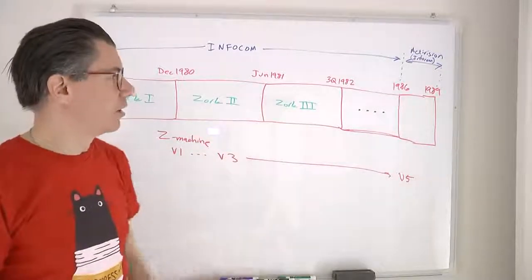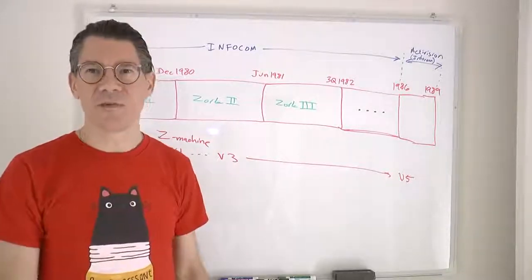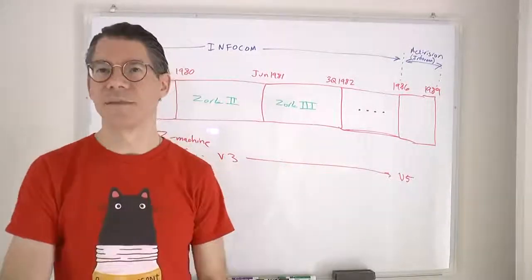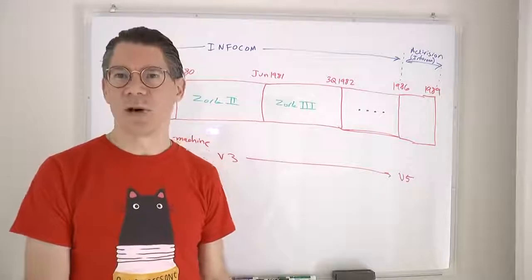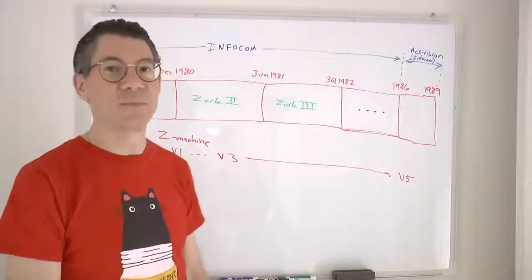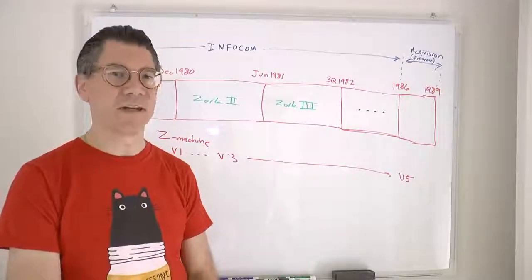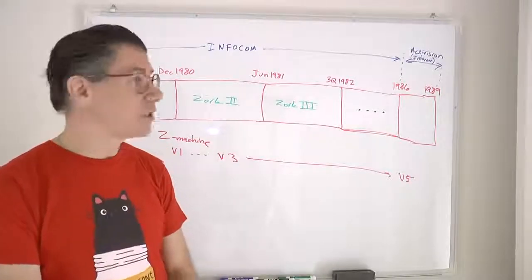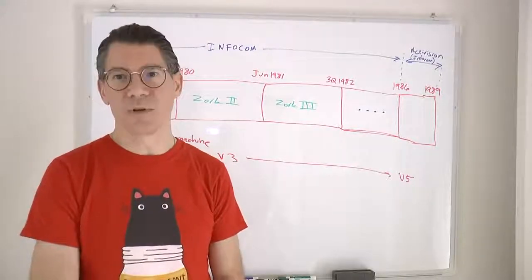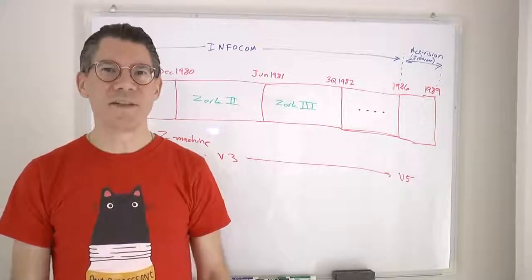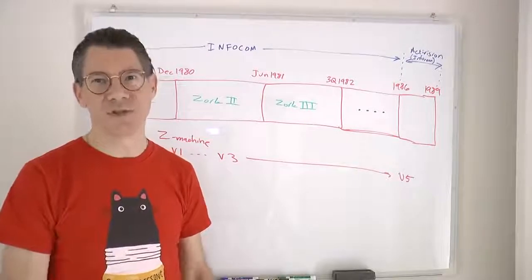From the beginnings of Infocom in 1980, starting with Zork 1, they released the rest of the adventure as Zork 2 and Zork 3, completing that by basically the third quarter of 1982. They then released more games, including the text adventure version of Hitchhiker's Guide to the Galaxy, until 1986, when they were bought out by Activision — pretty much the beginning of the end. Infocom became just a brand inside Activision, and after a couple more games, the brand was shut down in 1989. In 1997 there was one more release called Zork: The Undiscovered Underground, but it wasn't really Infocom — just trading on the name.